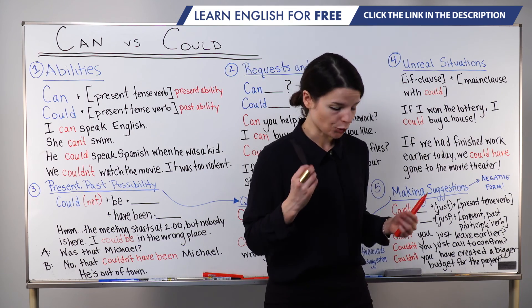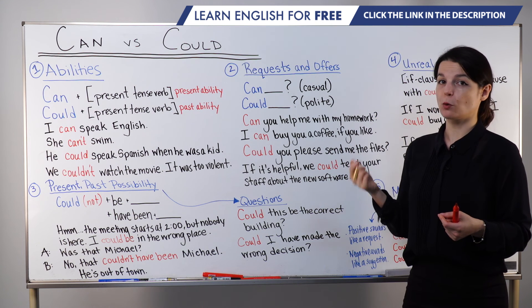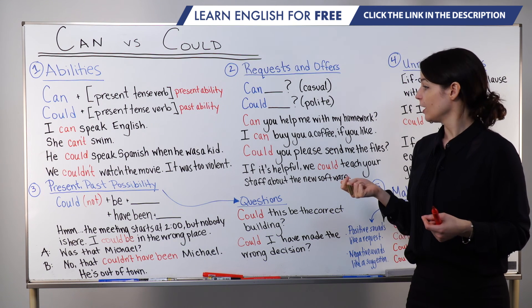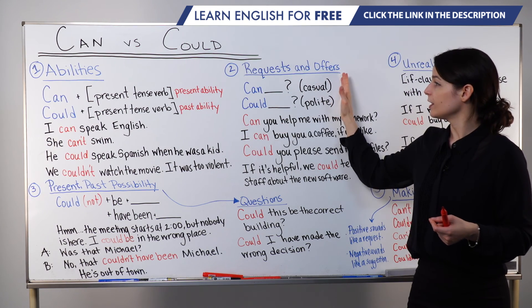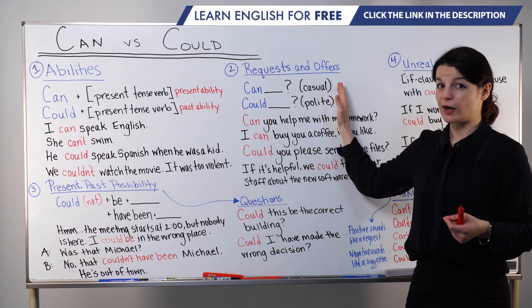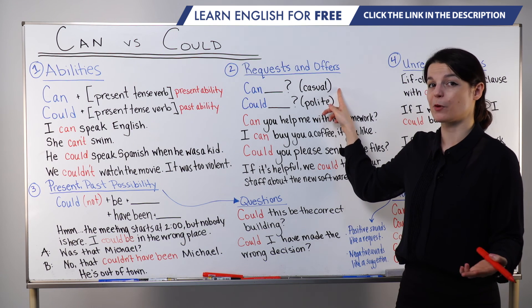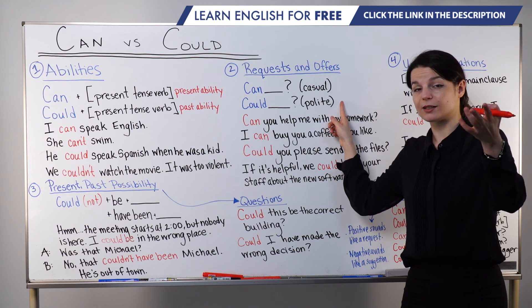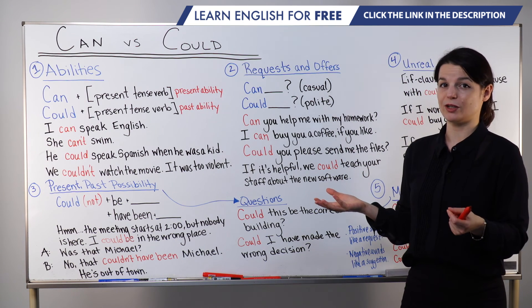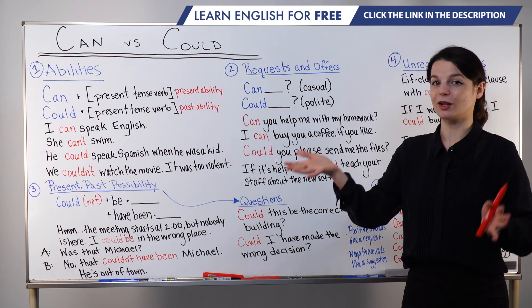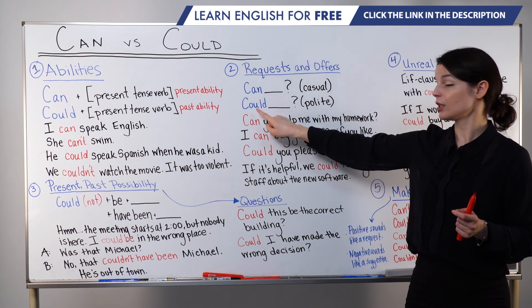Let's continue to point number two: using can and could for requests and offers. The difference when making requests and offers with can and could is simply that can sounds more casual and friendly, while could sounds a bit more polite. Both are okay in most situations. If you want to sound more formal or polite, use could. In most everyday situations, we use can.